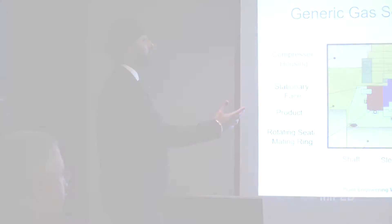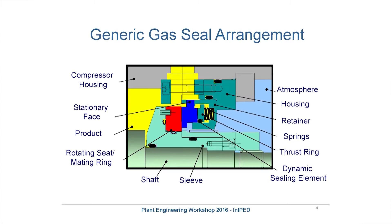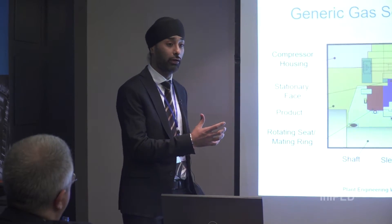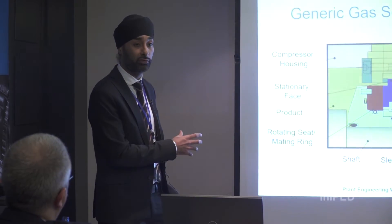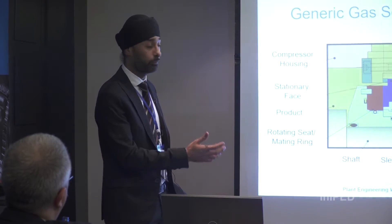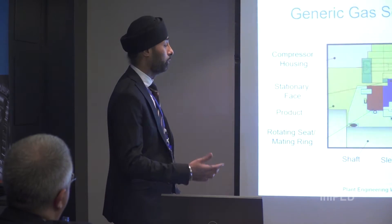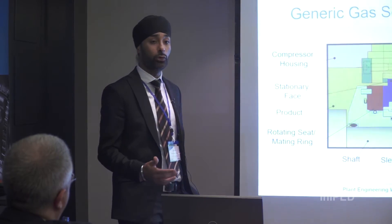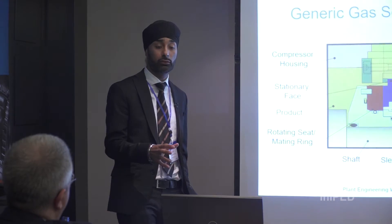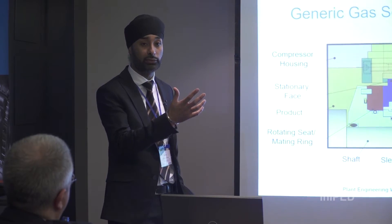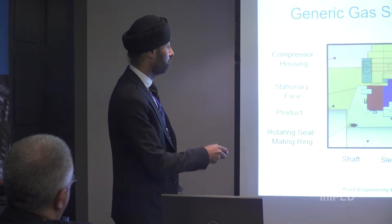This is a generic gas seal arrangement. Essentially, gas seals are what we use in a compressor system to seal the process gas away from the atmosphere. The process gas is shown in yellow and the atmospheric side is shown in blue. You have the shaft that rotates in a compressor and the housing that is stationary.